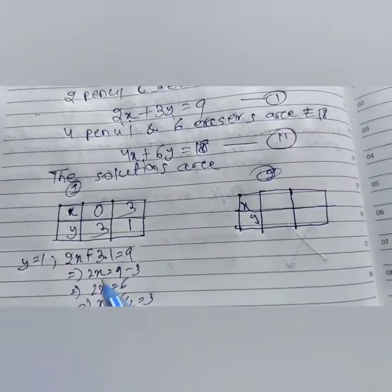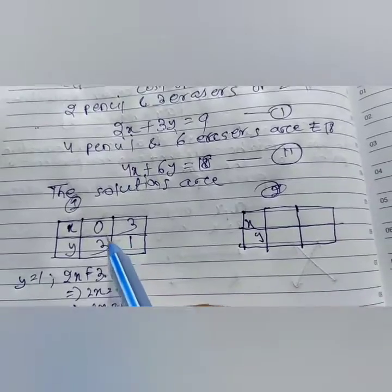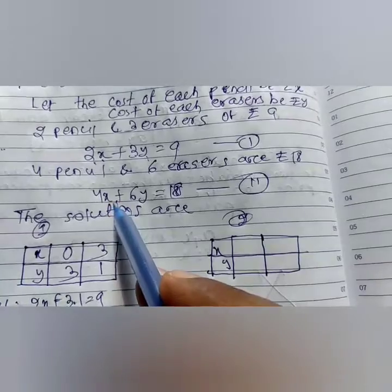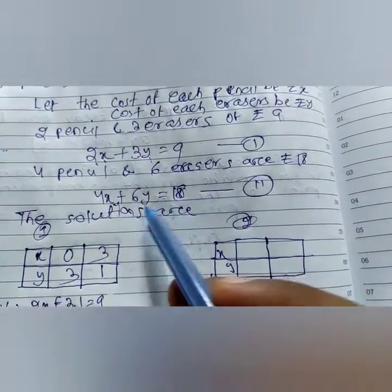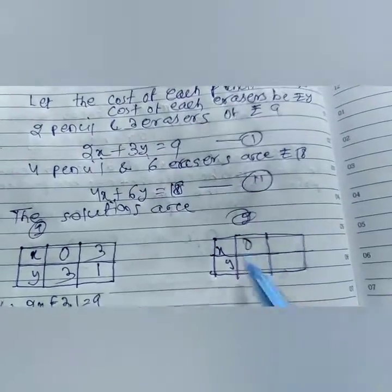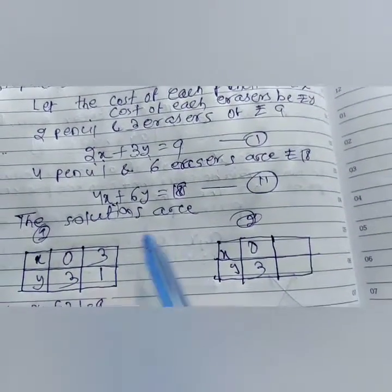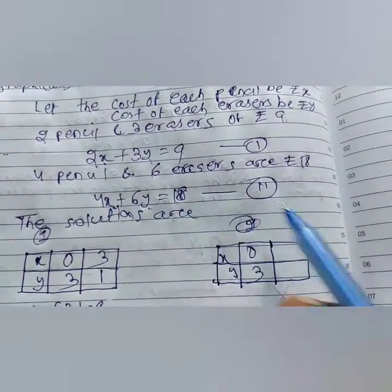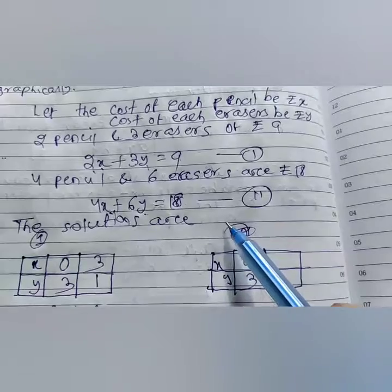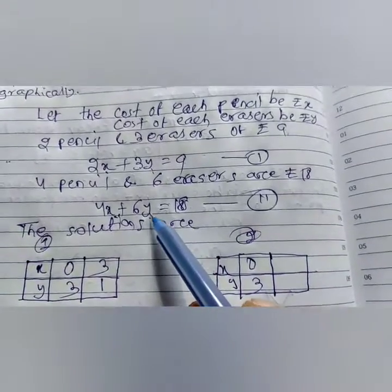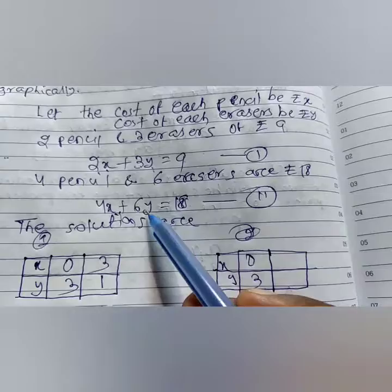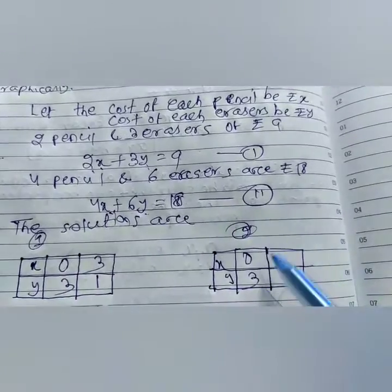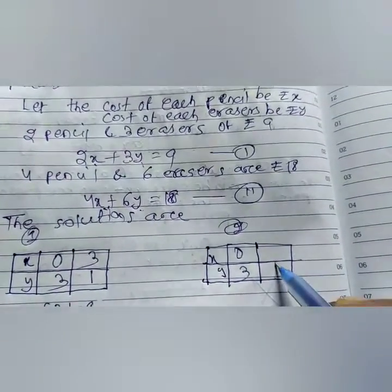So for equation 1, the table entries are (0, 3) and (3, 1). For equation 2, when x equals 0: 6y equals 18, y equals 3, so (0, 3). When y equals 0: 4x equals 18, x equals 4.5 — that's a fraction, so we check another number. When y equals 1: 4x plus 6 equals 18, so 4x equals 12, x equals 3. So (3, 1).